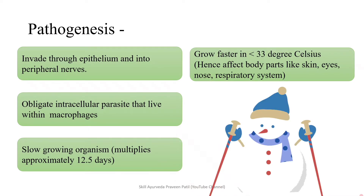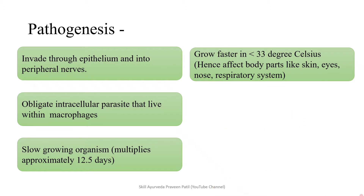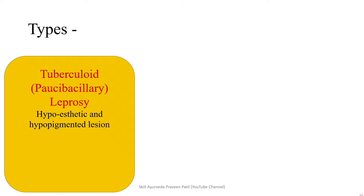The organism grows faster at temperatures less than 33 degrees Celsius, hence it usually affects cooler body parts like the skin, eyes, nose, and respiratory system. Coming to classification, there are two poles: the tuberculoid pole and the lepromatous pole.